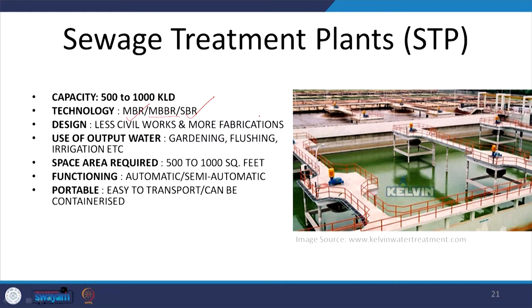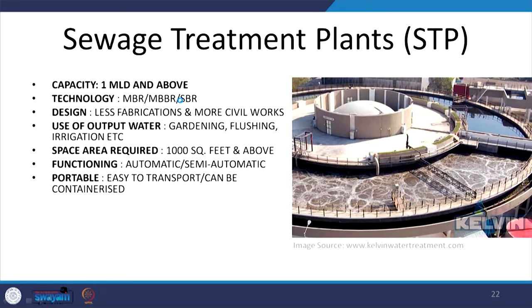At further increased capacities, MBR, SBR, and MBBR are common types of STP that can be scaled up in size and volume. These require less civil work but more fabrication, and the water can again be used for gardening, flushing, and irrigation, but they require relatively more area. Space requirement gradually increases as volumes increase, and transportation and portability become gradually more difficult as capacity grows. For very high capacities, any of these technologies can be used.